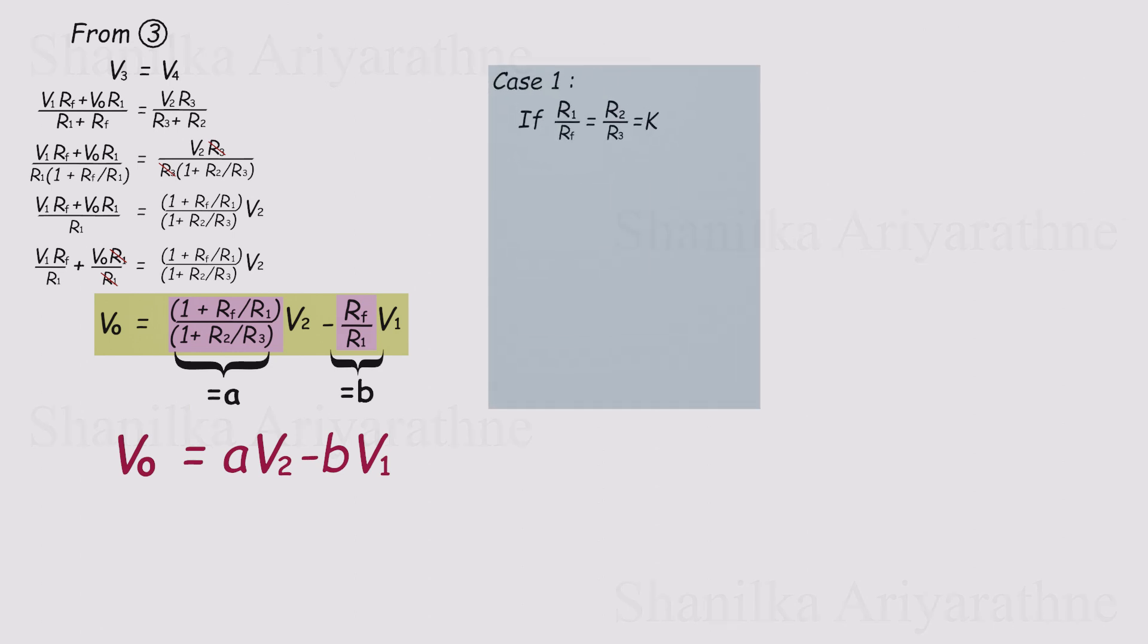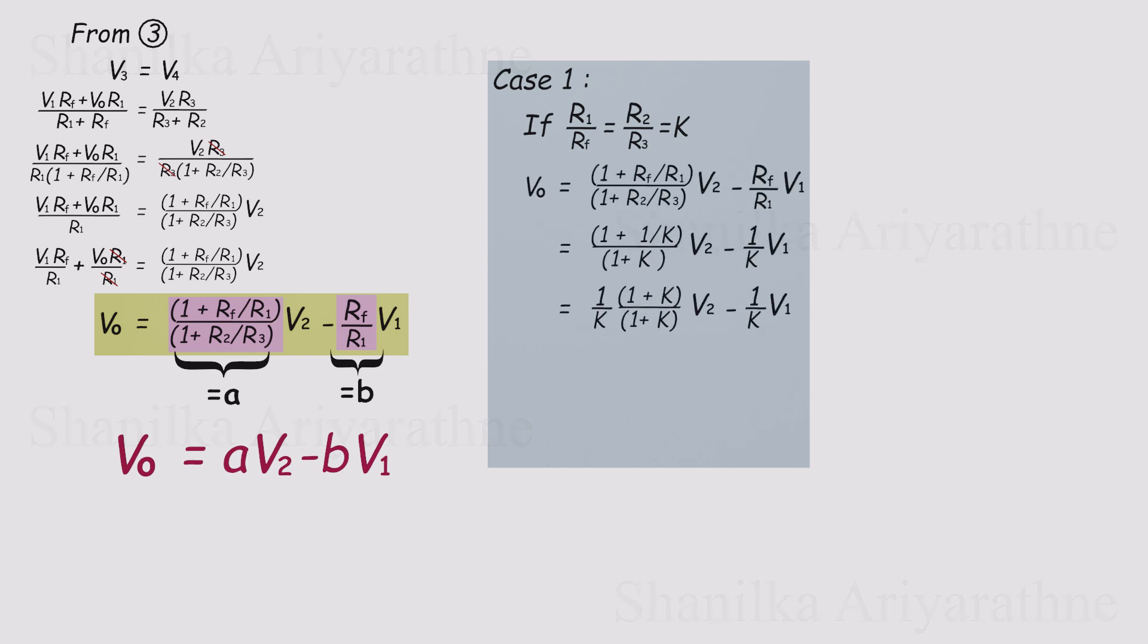First case, suppose the resistor ratios line up so that R1 over RF equals R2 over R3. Let's call that common ratio K. Now plug K into the standard formula. After a little simplification, you get Vout equals 1 over K times the difference of V2 minus V1. And since K itself can be written as RF over R1, this shows us something useful. If we want to amplify the difference between two signals, we just pick resistor values that make those ratios equal.